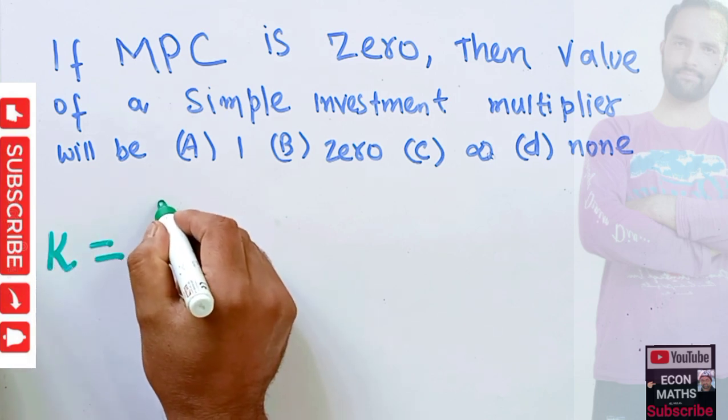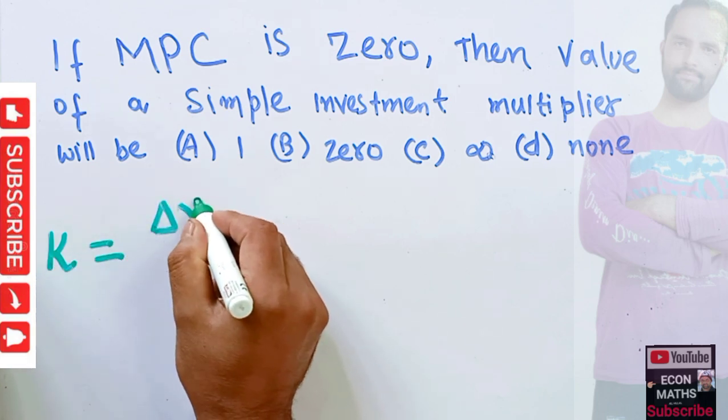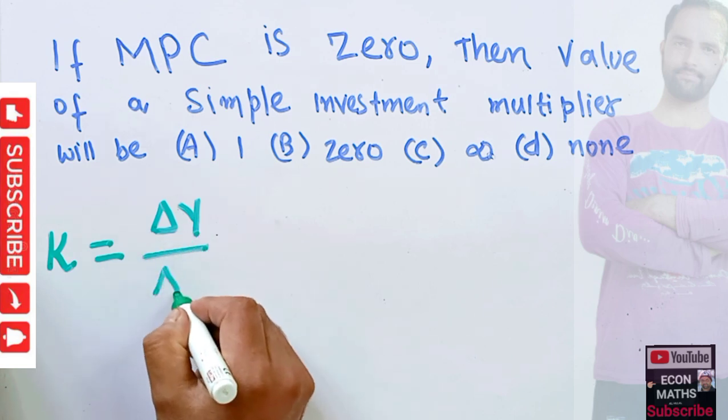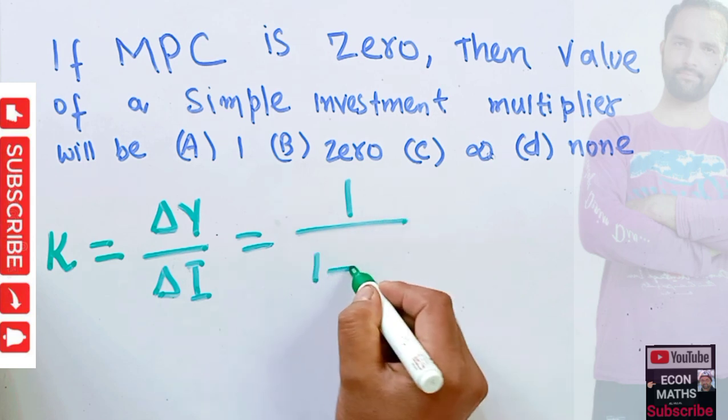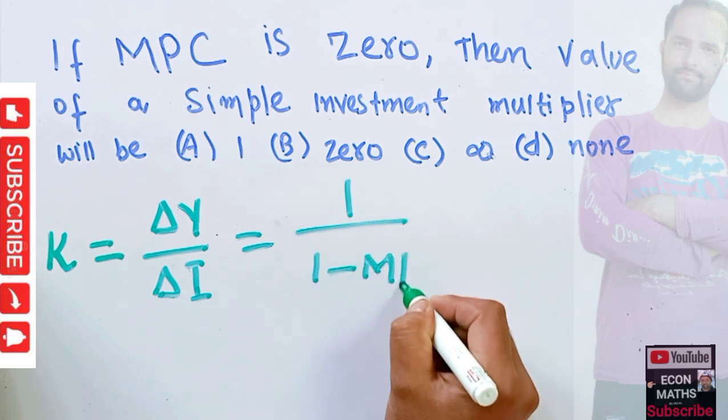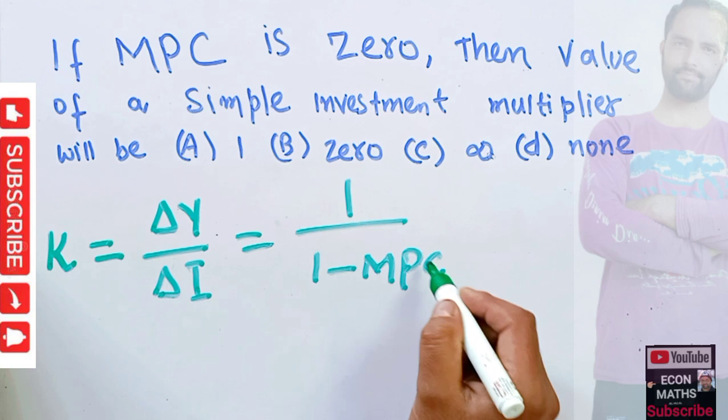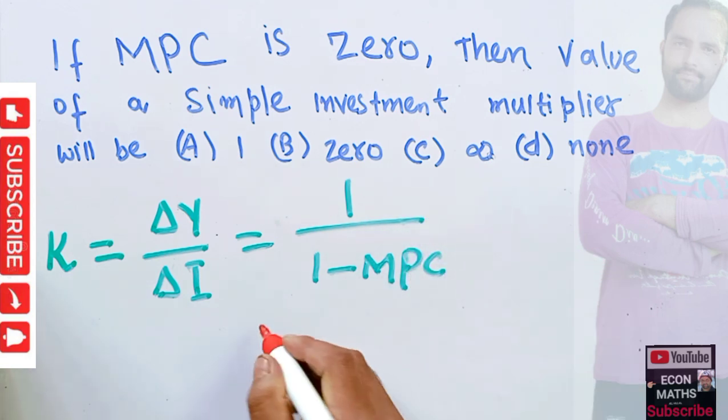K is equal to the change in income with respect to change in investment, which equals 1 upon 1 minus MPC. That is, 1 upon 1 minus marginal propensity to consume. We are given that MPC is equal to 0.